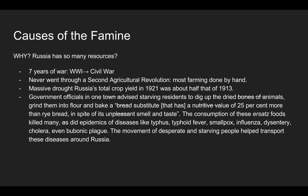As you saw in that link, government officials in one town started advising starving residents to dig up the dried bones of animals, grind them into flour, and bake a bread substitute that has a nutritive value of 25% more than rye bread in spite of its unpleasant smell and taste. The consumption of these ersatz foods killed many, as did epidemics of typhus, typhoid fever, smallpox, influenza, dysentery, cholera, and even bubonic plague. The movement of desperate, starving people helped transport these diseases around Russia, and overall this was a really dark time in Russia's history.